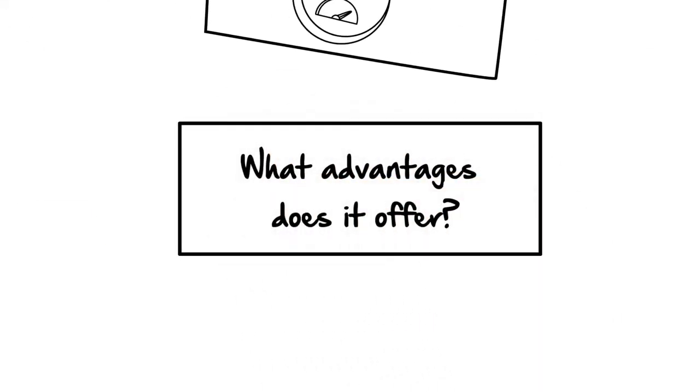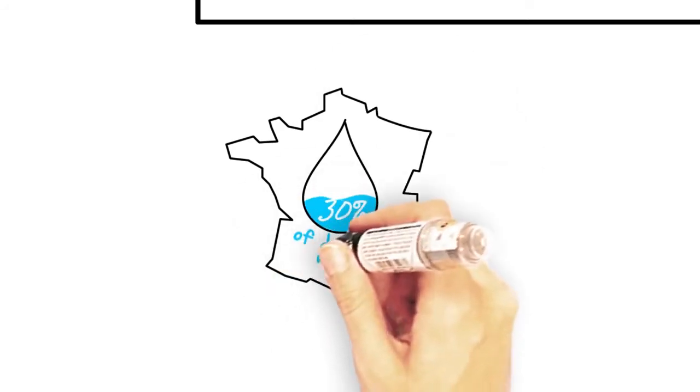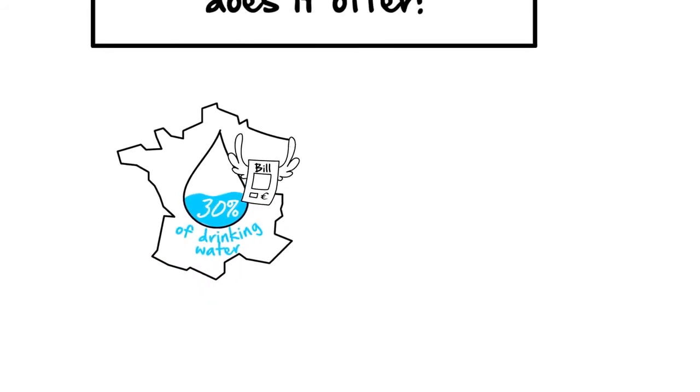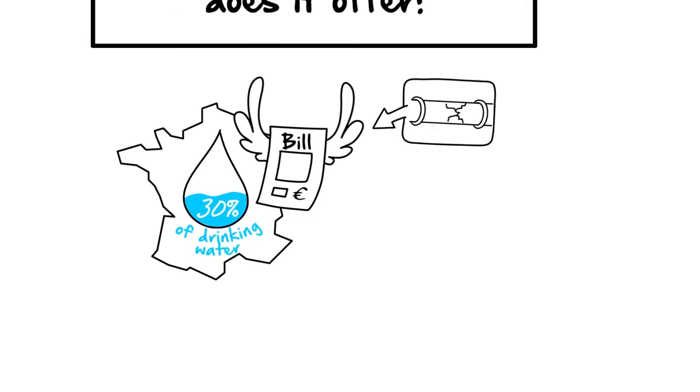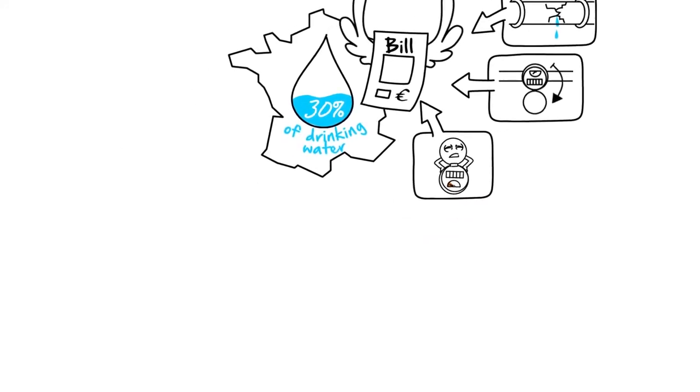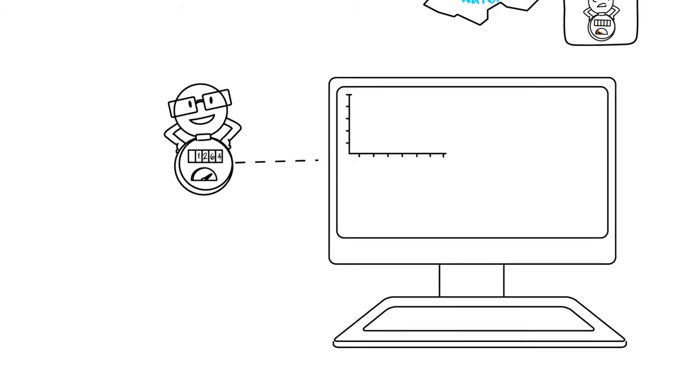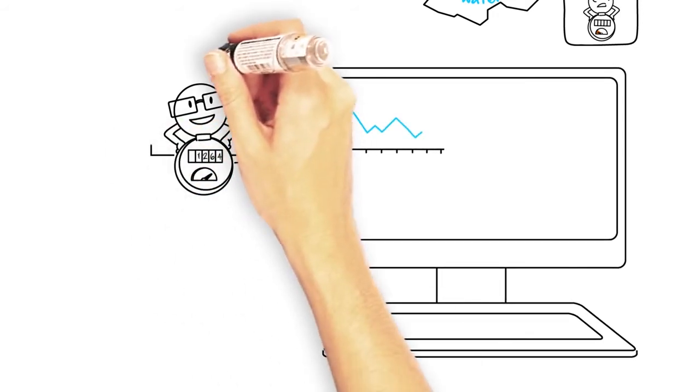What advantages does it offer? Right now in France, more than 30% of drinking water produced isn't paid for, either because of unidentified losses or because of fraud or defective meters. To reduce these losses, the smart meter records and sends each home's consumption data every day.